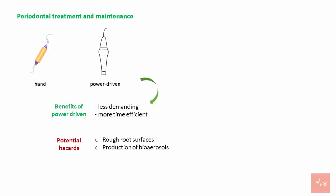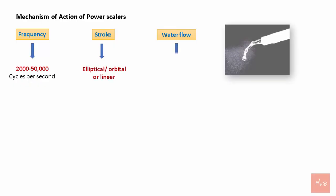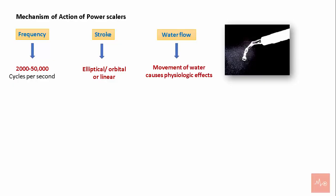Potential hazards of power instruments include a rough root surface, production of bioaerosols, and interference with cardiac pacemakers. The mechanism of action of powered scalers is influenced by three factors: frequency, stroke, and water flow. Frequency of scalers ranges from 2,000 to 50,000 cycles per second. The stroke of the working tip can be elliptical, orbital, or linear.